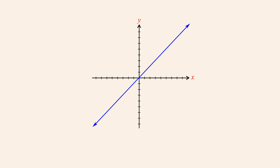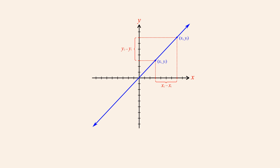You may recall that this formula uses the coordinates of any two points on a line to calculate the line's slope. If we call the coordinates of these two points (x1, y1) and (x2, y2), then the slope is the difference in the points' vertical positions, y2 minus y1, divided by the difference in horizontal positions, x2 minus x1.